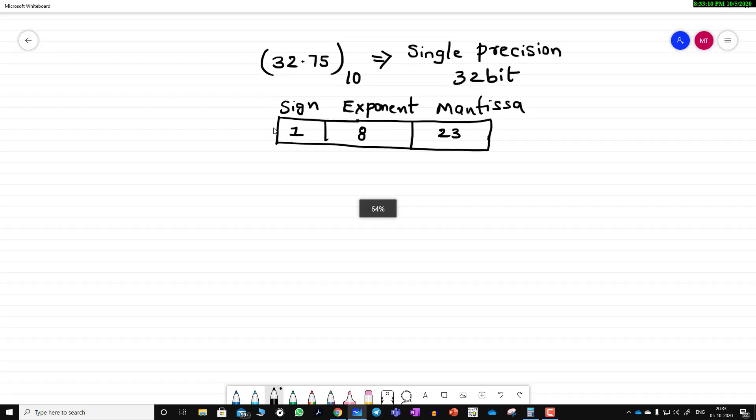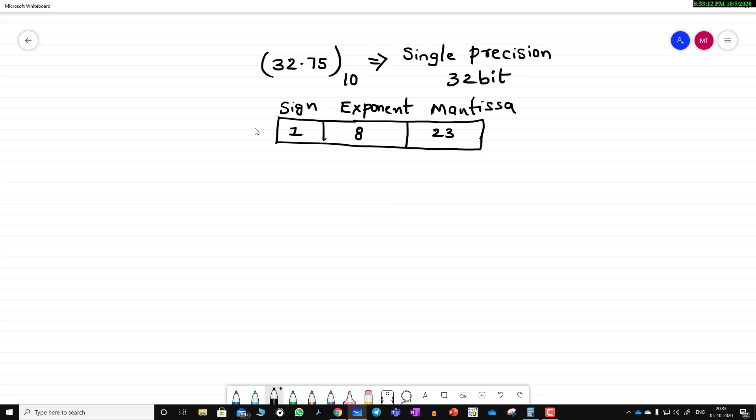First, let us solve 32.75. I'm converting 32, which is in decimal, to binary using continuous division by 2. The answer is 100000.